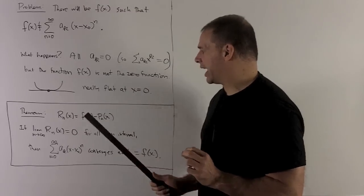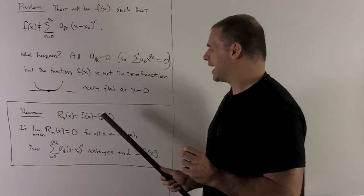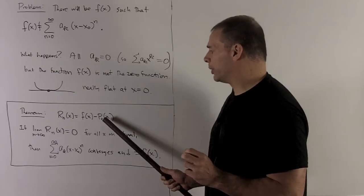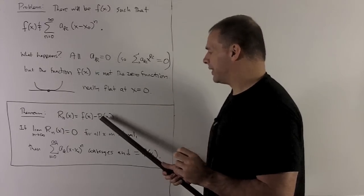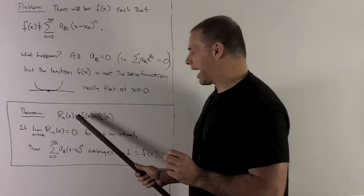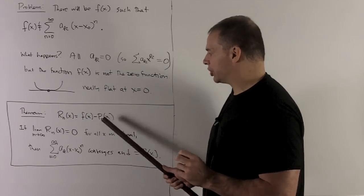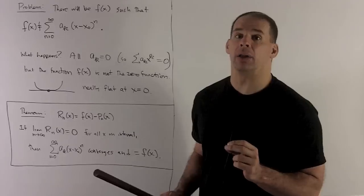this is going to be defined for each n as I take my function, I take my nth Taylor polynomial, take their difference, and then what's left over is going to be the error in the estimation by using the Taylor polynomial.